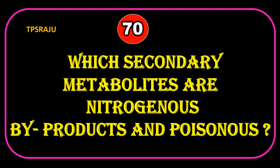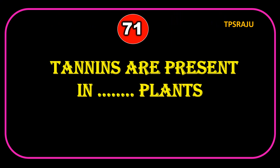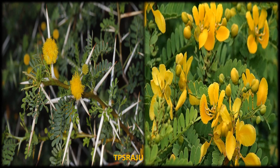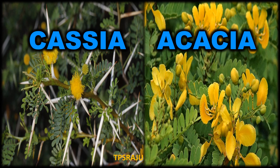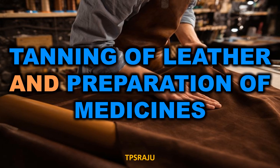Which secondary metabolites are nitrogenous by-products and poisonous? Tannins are present in Acacia plants. What are the uses of tannins? Tanning of leather and preparation of medicines.